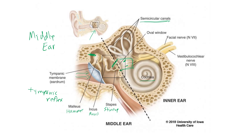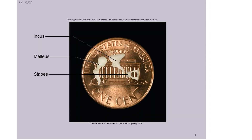The vestibulocochlear nerve is cranial nerve number VIII — these are nerves that come straight off the brain without going through the spinal cord. You can see one big branch going to the vestibule for balance and one large branch going to the cochlea for hearing; they come together and track up to the brain. Cranial nerve VII nearby is the facial nerve.